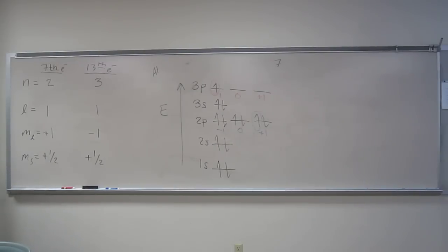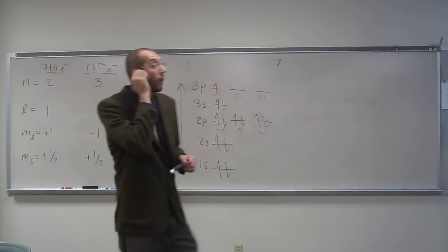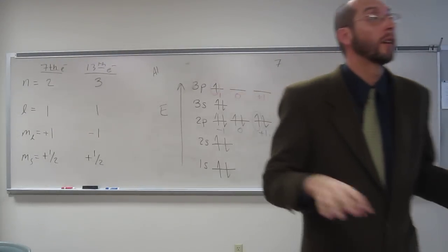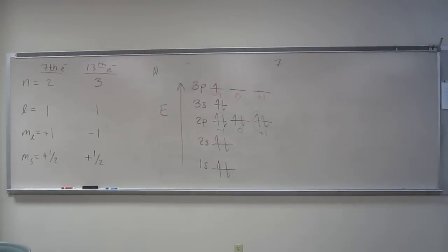You guys think you could do this on your own? So, again, these four numbers will include, or explicitly describe any particular electron in the orbitals that you could find.